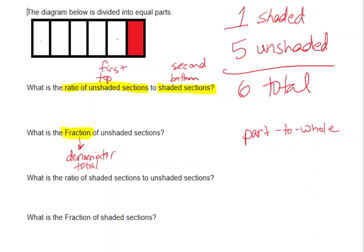That gives us six total sections, which will be the information we use to write these ratios. So the ratio of unshaded to shaded is five to one, which can also be written with a colon: 5:1.